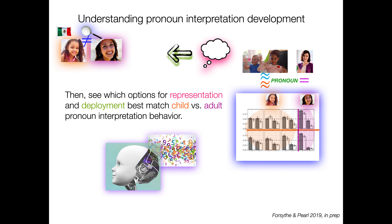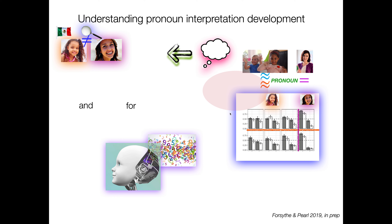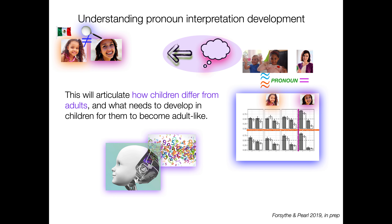We're going to see which options for representation and deployment best match child versus adult pronoun interpretation behavior. This will articulate how children differ from adults — the developmental part — and what needs to develop in children for them to become adult-like in their pronoun interpretation.